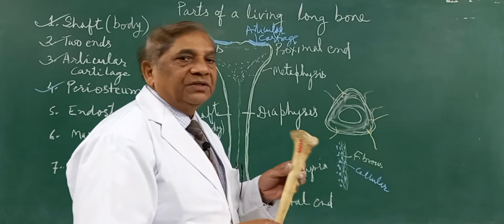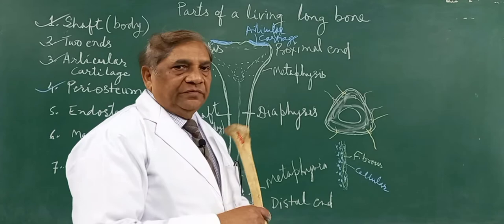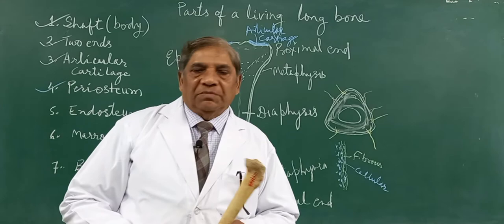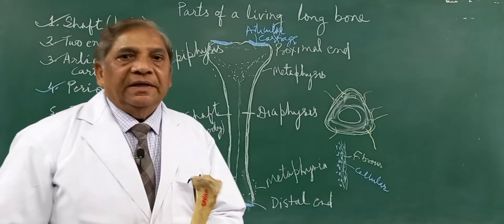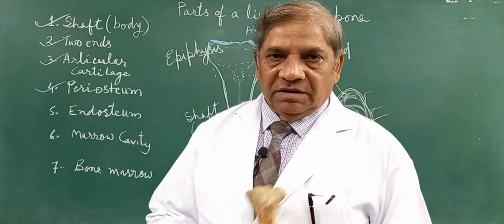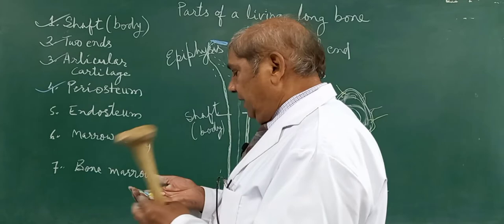The periosteum also provides attachment to the deep fascia or the intermuscular septum in certain bones. Intermuscular septum will be covered when you go to the general anatomy classes about muscles. So this was another part of the living long bone — we are talking of a living bone, not a dry bone or dead bone.